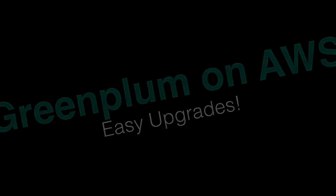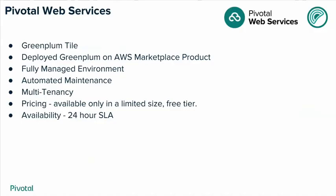Last but not least, we have Pivotal Web Services. We now have a tile in the Pivotal Web Services offering for Greenplum, so developers building software in Pivotal Web Services can pick Greenplum very easily, fully integrated in Pivotal Web Services. This is a fully managed environment with automated maintenance, multi-tenancy, and it's actually deployed using the Greenplum on AWS Marketplace offering. Pricing is free, availability is a 24-hour SLA, and it's just another way to start using and evaluating Greenplum in the cloud.